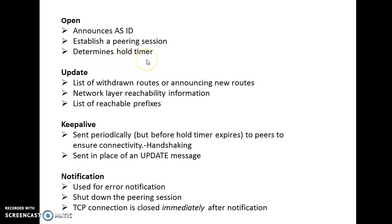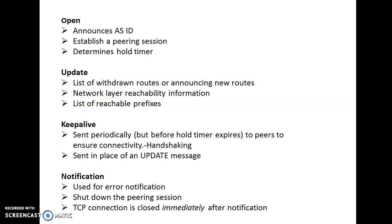The next BGP message is the Update message. This message is used to update with different routes that are added or removed. It leads to withdrawn routes or announces new routes. It is also responsible for network reachability information and the list of reachable prefixes.